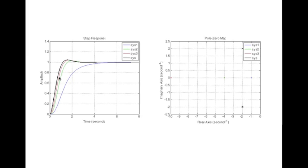In general, additional poles make the system response slower. You see, rise time for this is slower than this, which is slower than this, which is slower than this.